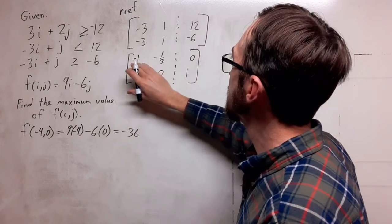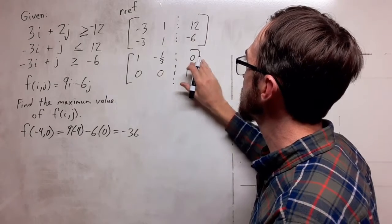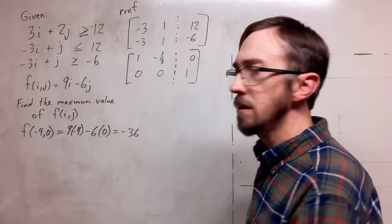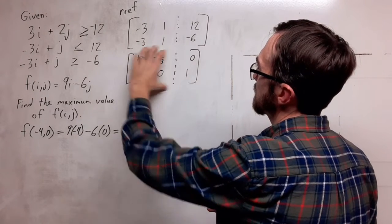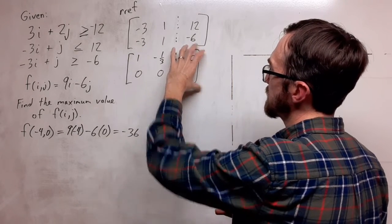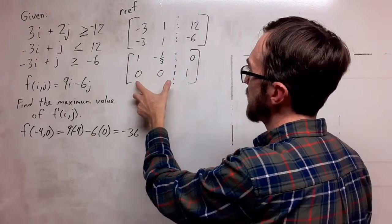This time I get 1, negative 1 third, 0, 0, 0, 1. How do I interpret this? I didn't get the identity here. I did get some numbers that could potentially work here, but notice this bottom line.